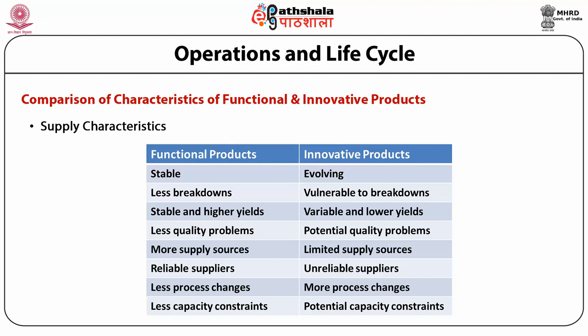From the perspective of supply characteristics: functional products are more stable; innovative products are evolving. Functional products carry fewer breakdowns; innovative products are vulnerable to breakdowns. Functional products are stable and carry high yield; innovative products carry variability and low yield. Functional products carry fewer quality problems; innovative products have potential quality problems. Functional products have more supply sources; innovative products have limited supply sources. Functional products have reliable suppliers; innovative products have unreliable suppliers. Functional products have fewer process changes, whereas innovative products have more process changes. Functional products have fewer capacity constraints, whereas innovative products have potential capacity constraints.